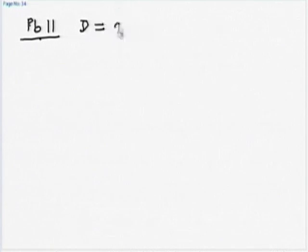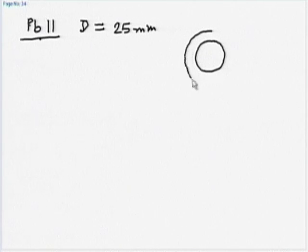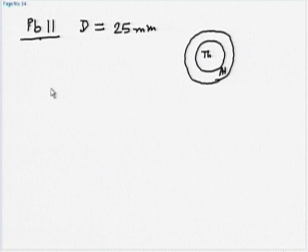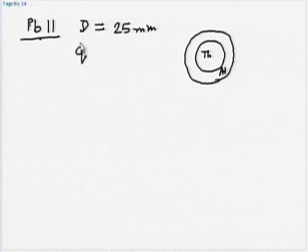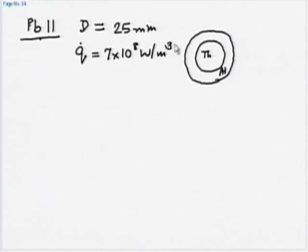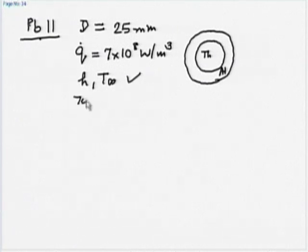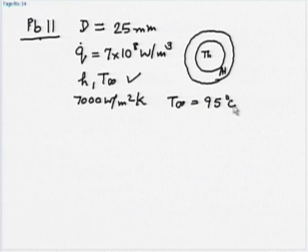The diameter is given as 25 mm and there is a thin aluminum cladding. There is a thorium rod with a cladding made of aluminum. Under steady state conditions, the system operates with a volumetric heat generation rate of 7 times 10 to the power 8 watts per meter cube. h is 7000 watts per meter squared Kelvin and T infinity is 95 degrees Celsius.